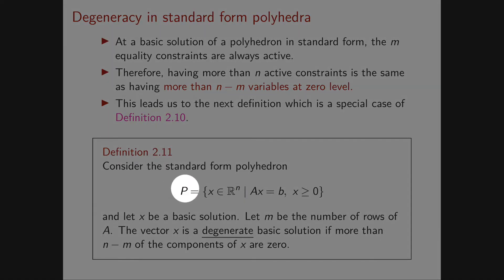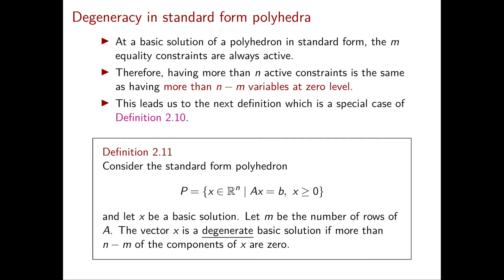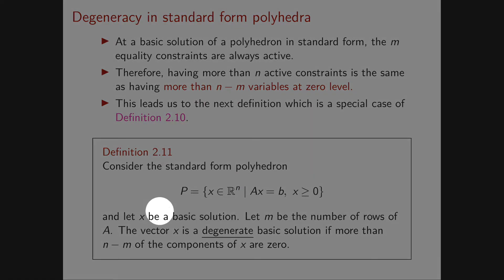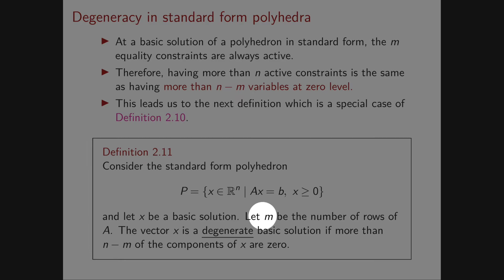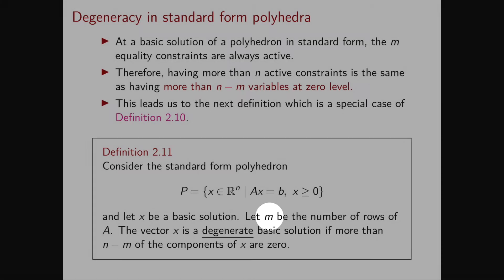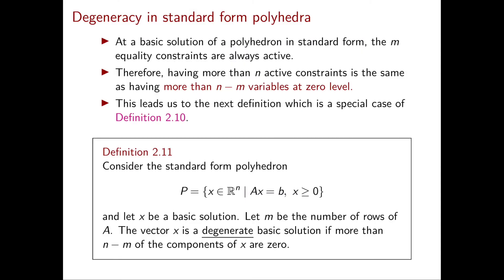Consider the standard form polyhedron P given by Ax = b, x ≥ 0, and let x be a basic solution. Assuming the number of rows of A is m, then the vector x is a degenerate basic solution if more than n minus m of the components of x are zero.